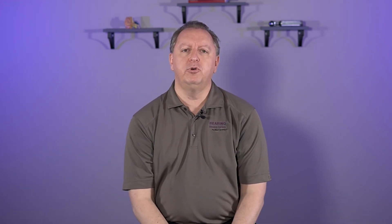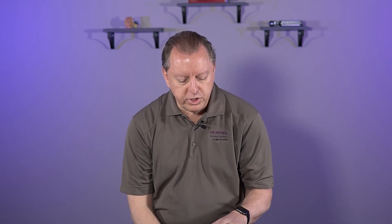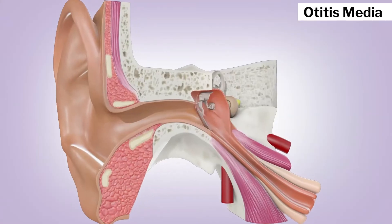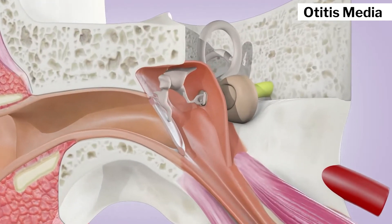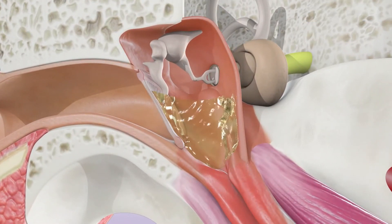Now let's shift to what's called otitis media. Otitis — disease; media — middle. So that's disease of the middle ear. Let's watch the little video here. You have disease of the middle ear and you'll notice there's a little spot on the bottom that fills up with fluid.